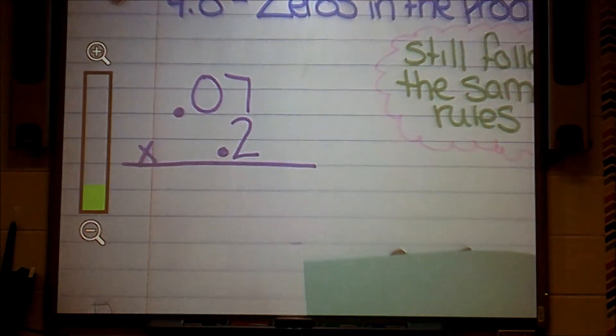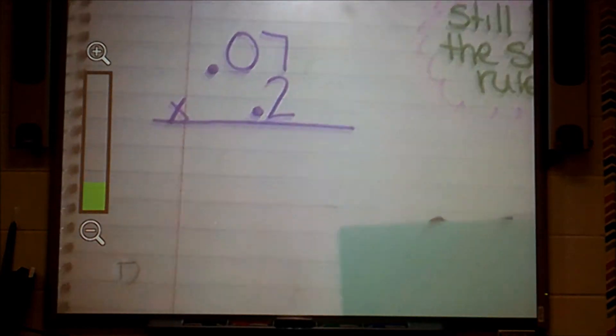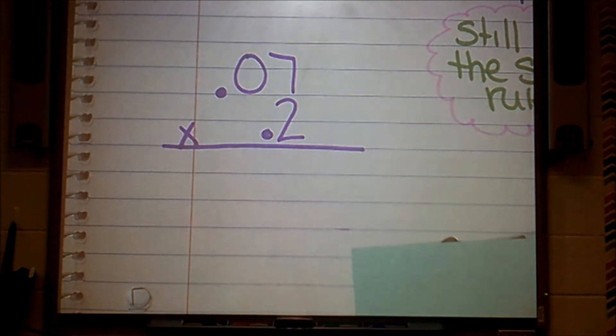As I said, we're going to solve this problem following the same rules as we did the previous day when we were multiplying. We're going to forget about those decimals, pretend like they aren't even there, and I'm simply going to solve this problem. This problem is 0.07 times 0.2. I could do that in my head, right? 7 times 2? It's 14. It gives me a product of 14.